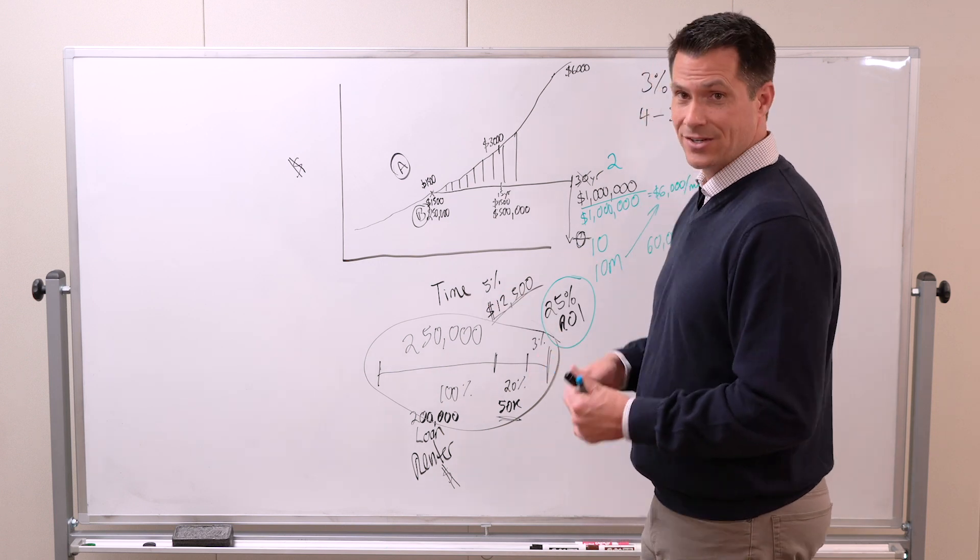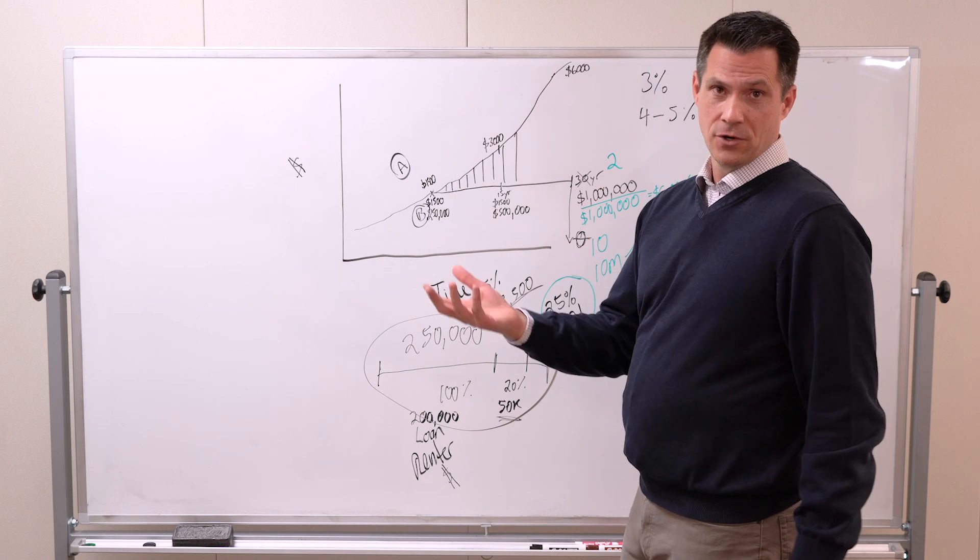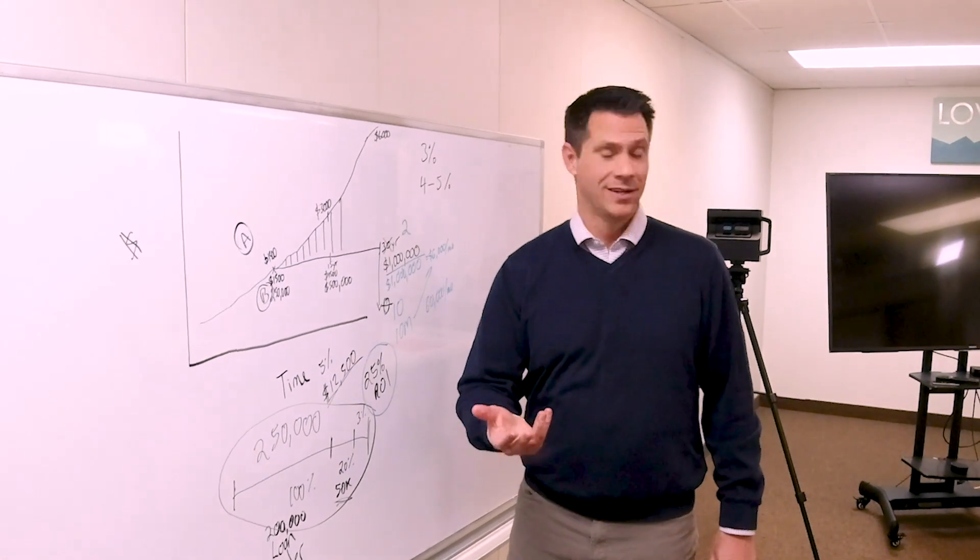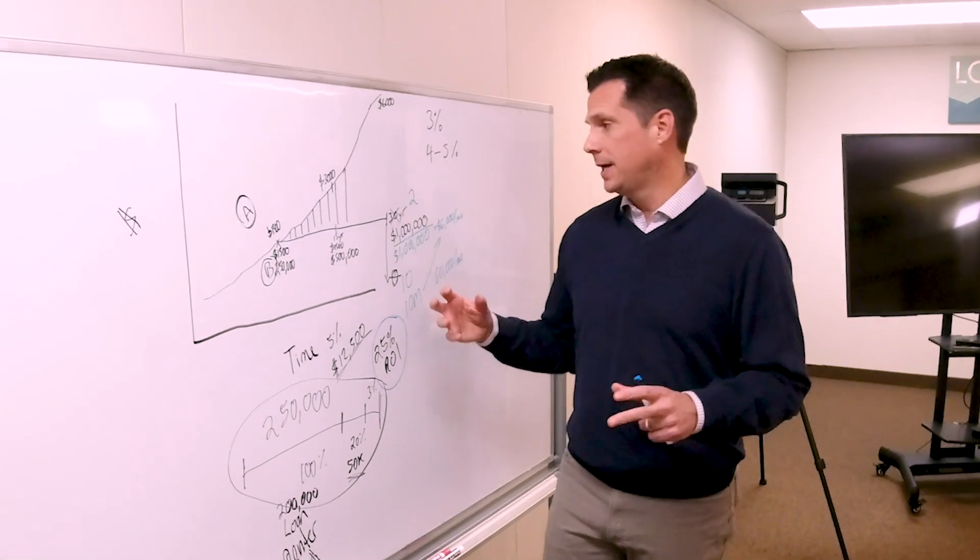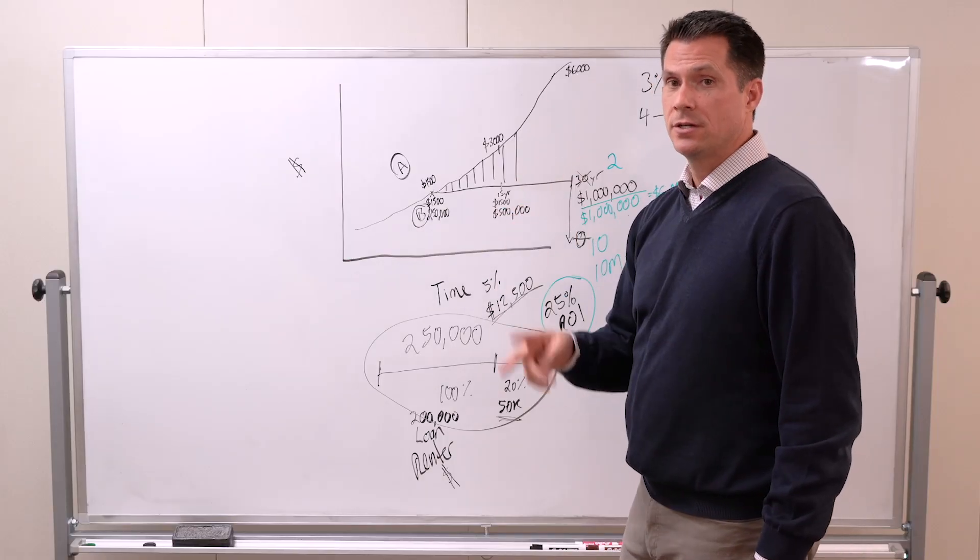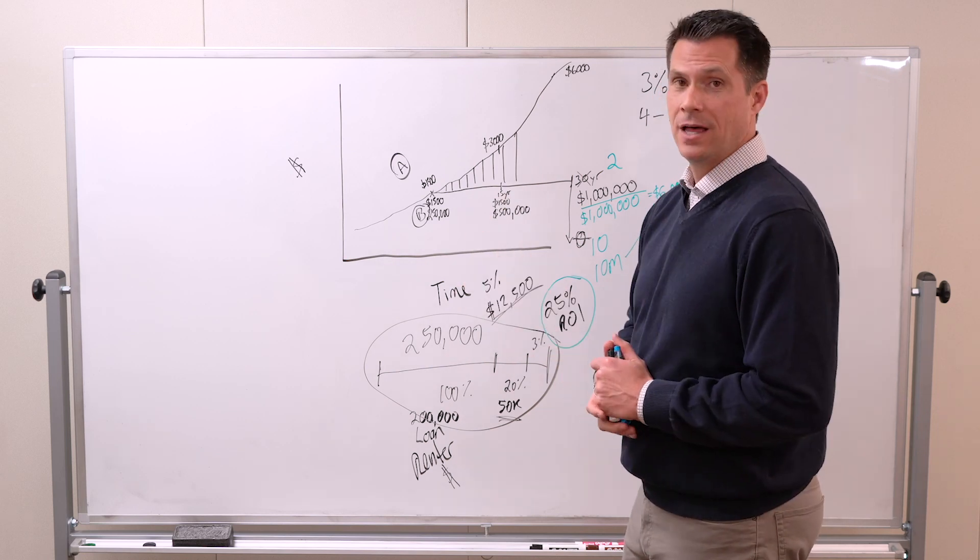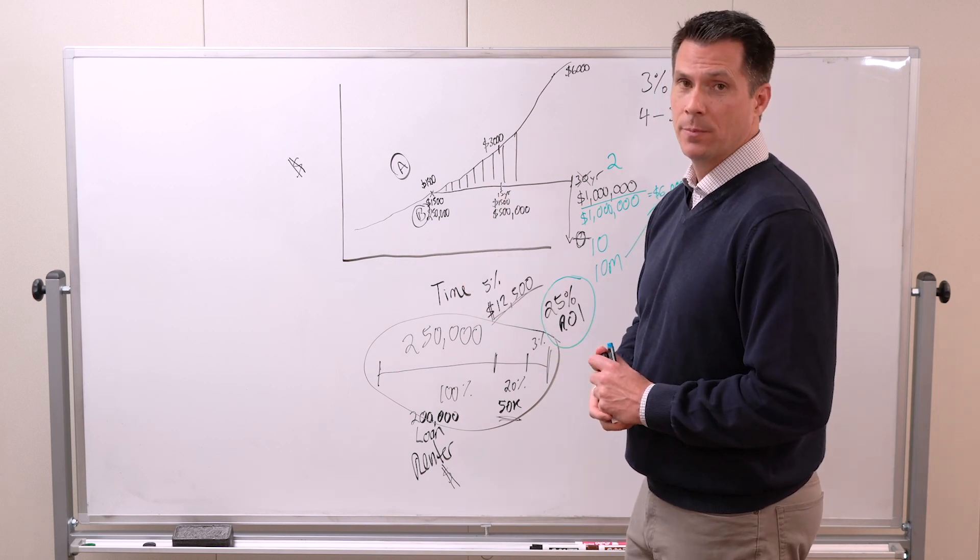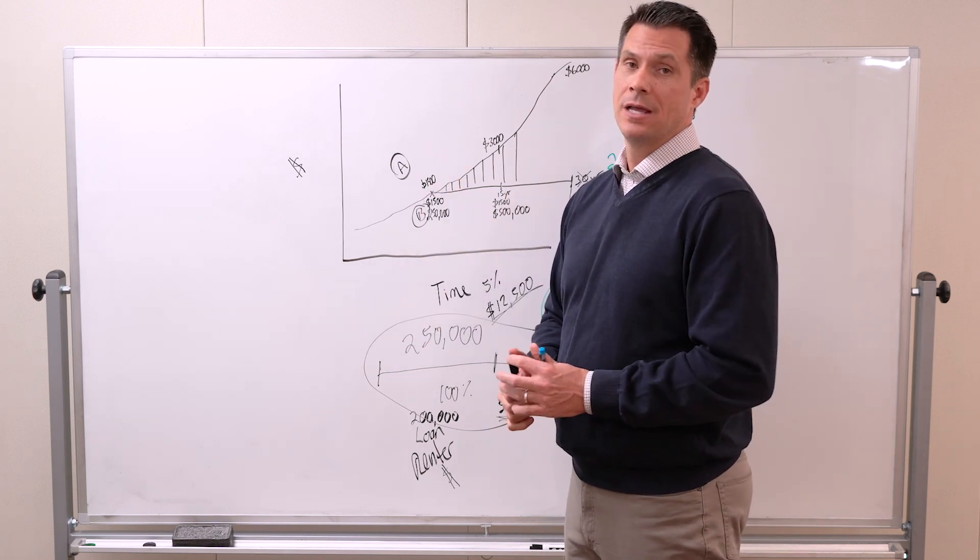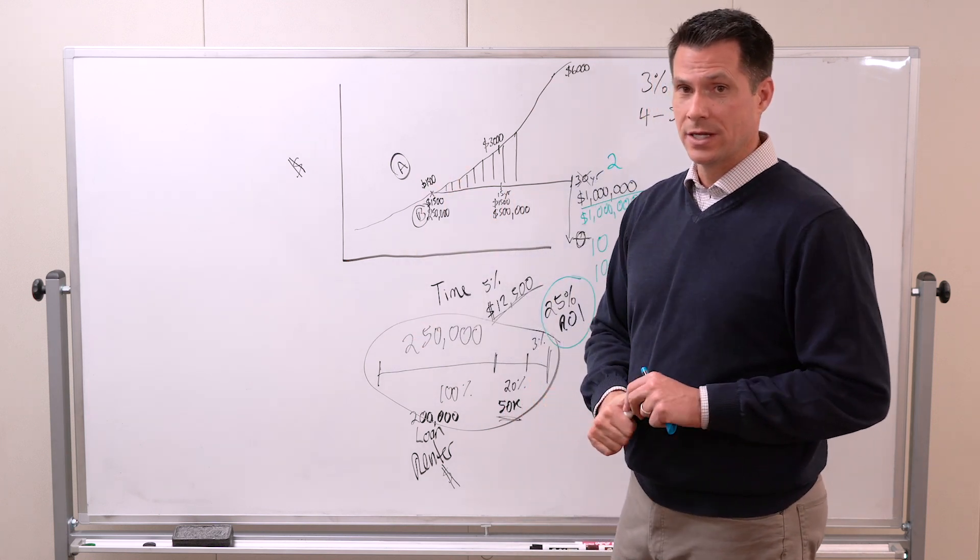And it doubles because property values are going up and it costs more to build. So these things together combined mean you're earning two types of income: appreciation and cash flow. And those only get better over time. The longer you hold these properties and the more real estate you have, the bigger those numbers. And that's how people make millions in real estate—it's very simple.